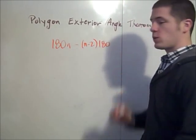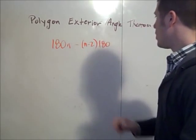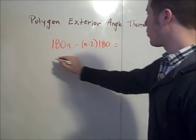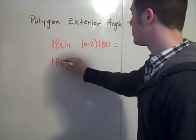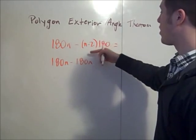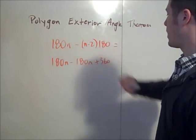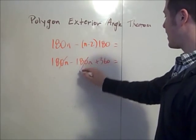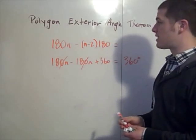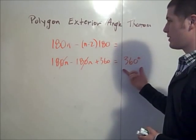This leaves us with the sum of all the exterior angles of a convex n-gon. Distributing, we have 180n minus 180n plus 360. The 180n terms cancel and we are left with just 360 degrees. So the sum of all the exterior angles in any convex n-gon is 360 degrees.